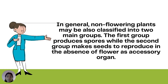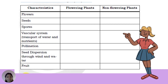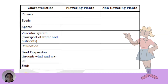In general, non-flowering plants may also be classified into two main groups: the first group produces spores, while the second group makes seeds to reproduce in the absence of flowers. Characteristics of flowering versus non-flowering plants: flowers — flowering plants; seed — flowering plants; spores — non-flowering plants; vascular system for water and nutrients — non-flowering plants; pollination — flowering plants; seed dispersion through wind and water — flowering plants; and fruit — flowering plants.